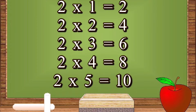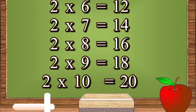2 ones are 2, 2 twos are 4, 2 threes are 6, 2 fours are 8, 2 fives are 10, 2 sixes are 12, 2 sevens are 14, 2 eights are 16, 2 nines are 18.